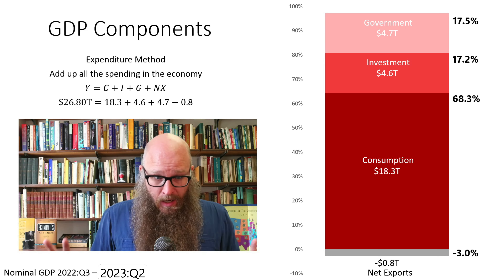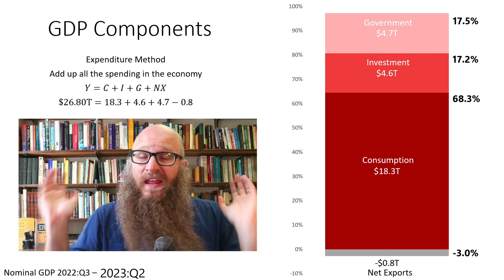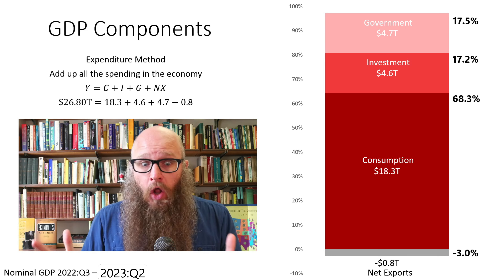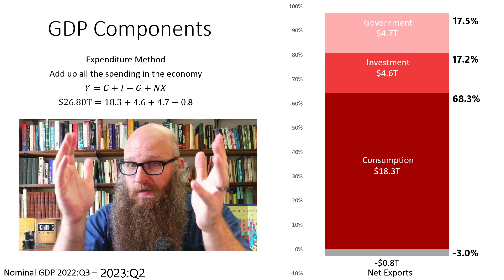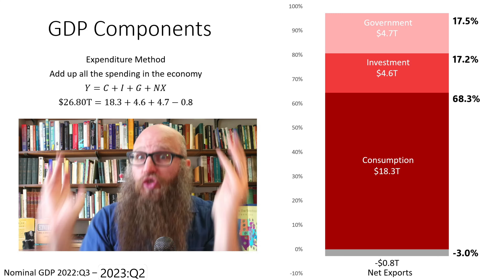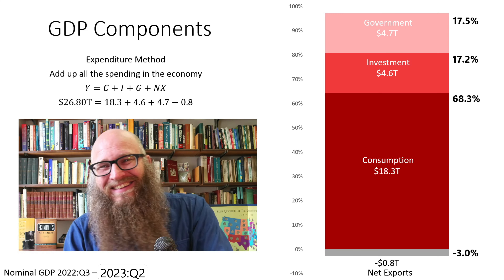So that means every year we are producing over $25 trillion of new goods and new services. It's a big country, y'all.